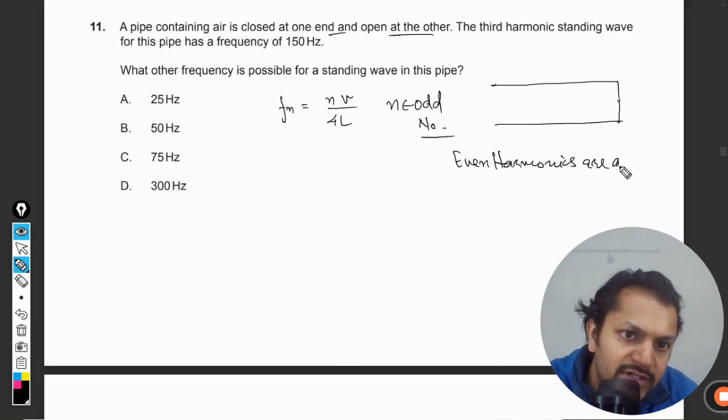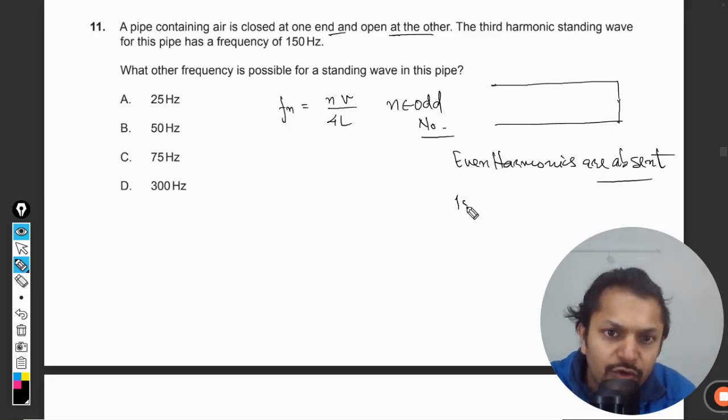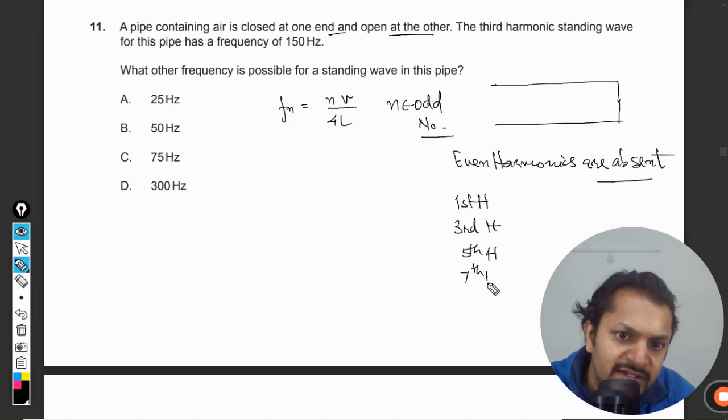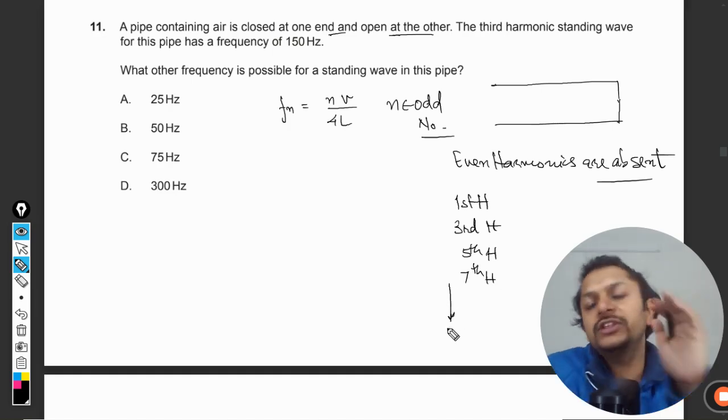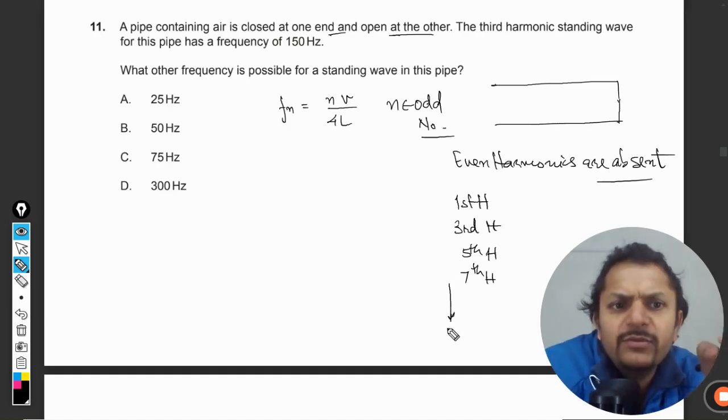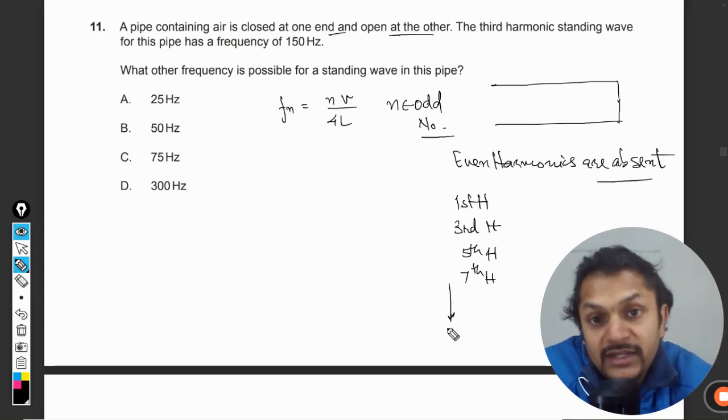Only odd harmonics are present, so first harmonic could be there, the next will be the third harmonic, and the next will be the fifth harmonic. Likewise you can go for the odd number harmonics. Even number harmonics are not present because this is a pipe which is closed at one and open at the other.